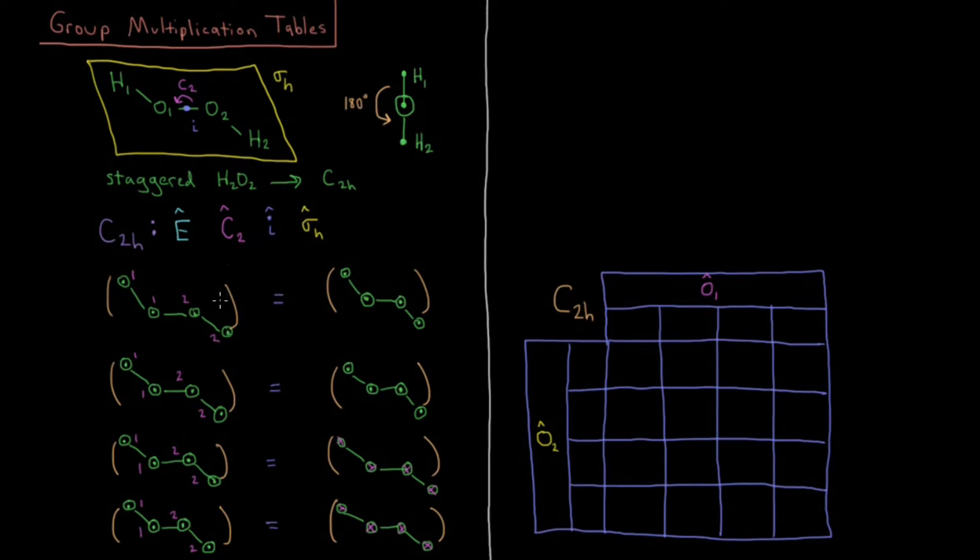So what is the effect of all of these operations on my particular molecule here? If I have E acting on it, or C2, or I, or sigma H. E acting on it leaves it unchanged, so that's going to be H1 and O1, and H2 and O2 stay in the same position. Everything is unchanged.